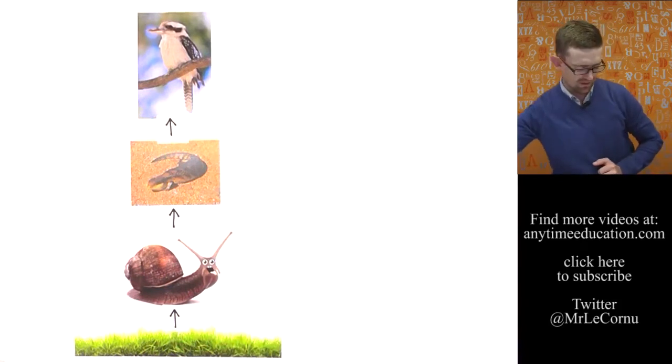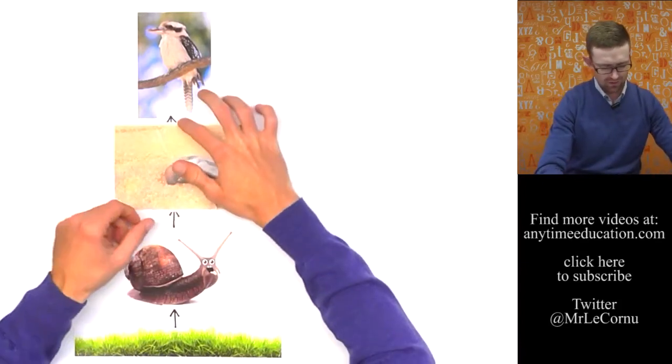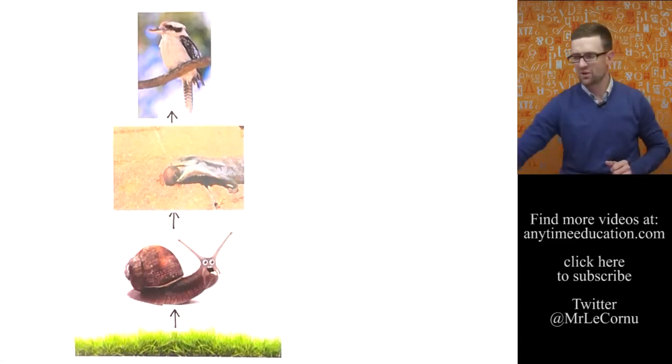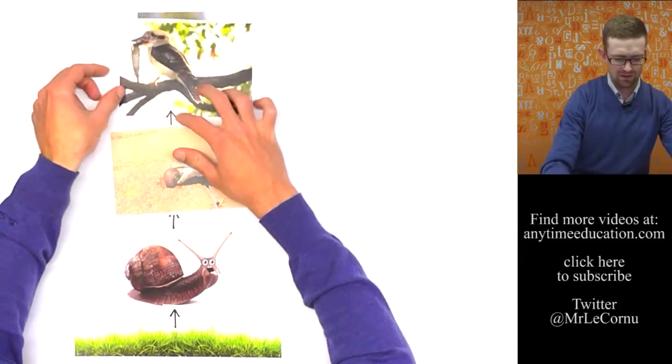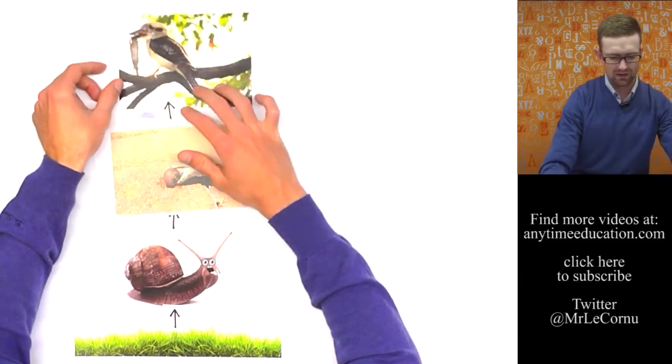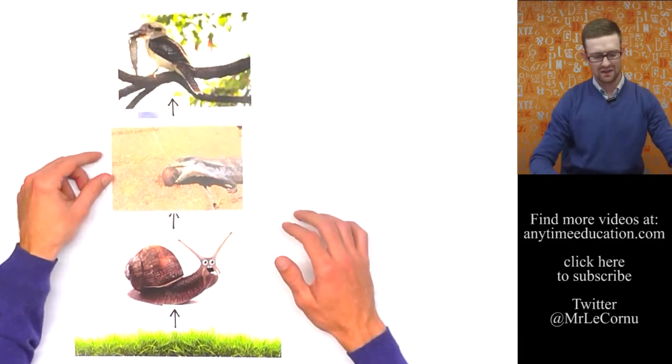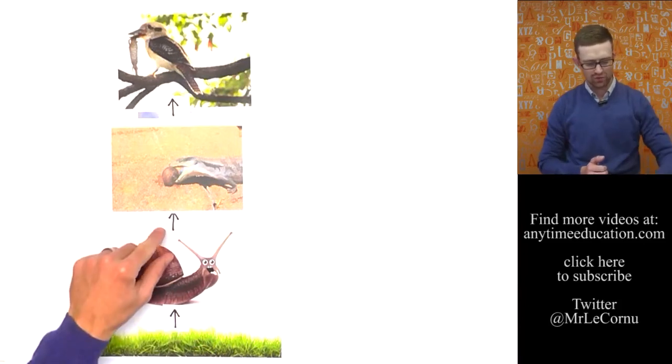So as I said the snail eats the grass. The lizard, here we go. We can add this diagram here showing you, yeah it's pretty hungry there, lizard eating the snail. And then the kookaburra eats the lizard. Yes kookaburras are carnivorous so they do eat other animals. And that there is a simple example of a food chain.